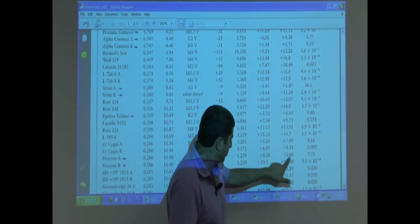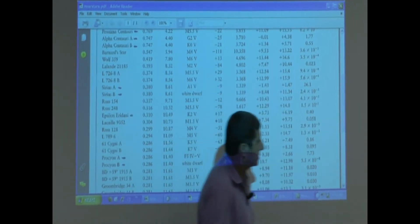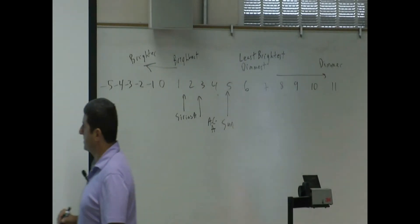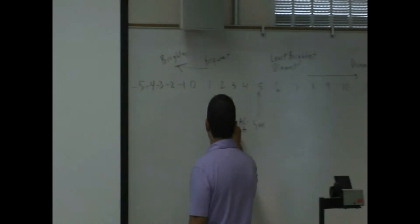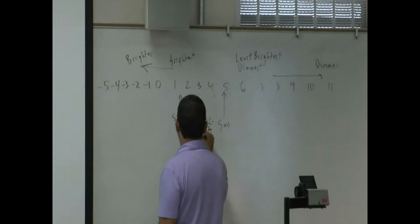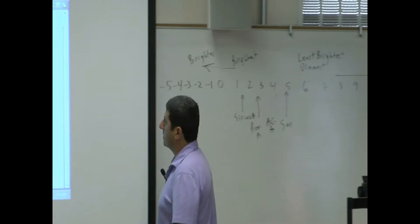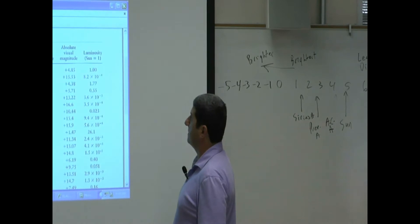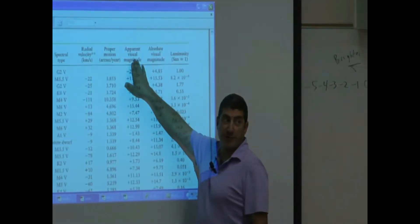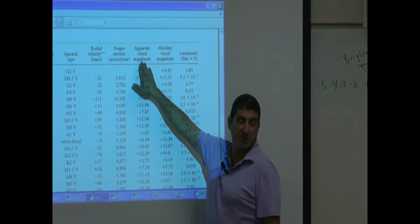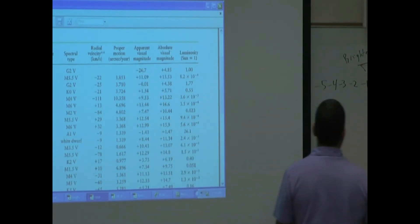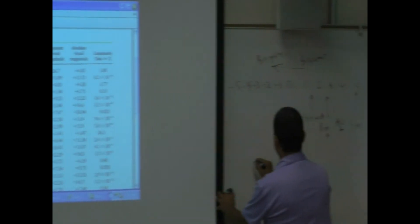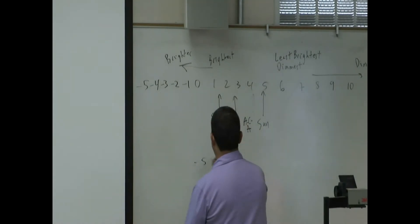Now you can clearly understand what those columns mean. For example, Procyon A gets 7.73 absolute and 2.66 apparent. Now, apparent visual magnitude is how bright the star appears to us, so we need to build another scale for that — going from negative 5, 0, 5, 10, 15, and also negative 10, negative 15, all the way to negative 20.